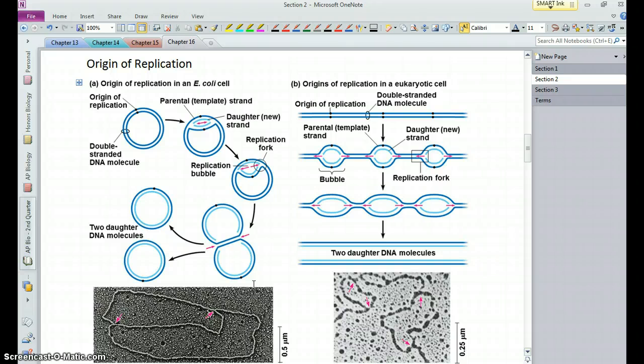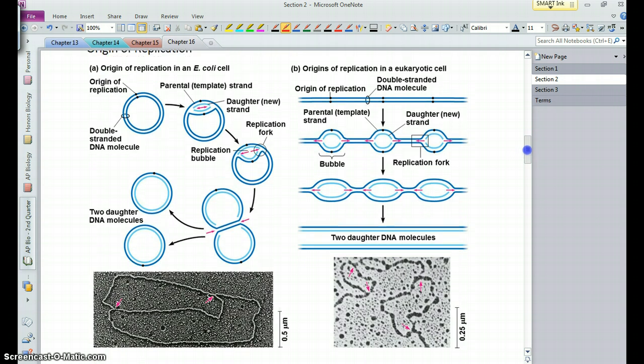Replication has to start somewhere on a chromosome, and so that's known as the origin of replication. That's kind of where things get started.